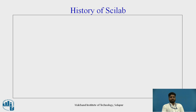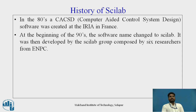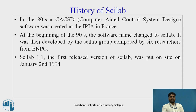We will now see the history of Scilab. In the 1980s, the CACSD — that is computer aided control system design software — was created at IRIA in France. Then, at the beginning of the 1990s, the software name changed to Scilab. It was then developed by the Scilab group composed of six researchers from ENPC. Scilab 1.1, the first released version of Scilab, was put on site on January 2, 1994.